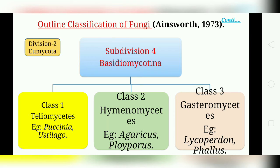The third class is Gasteromycetes. These are also called puffballs, stinkhorns, or bird nest fungi. The basidiocarpe is well developed, forming a cavity, and a fleshy gleba is formed with the capillitium. An example is Geastrum or Phallus.